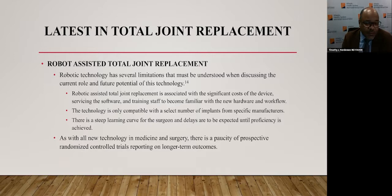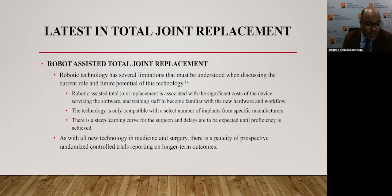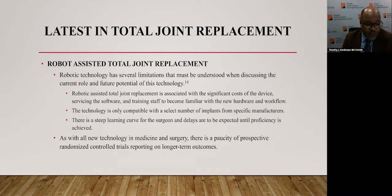Robotic technology has several limitations that must be understood. Number one, robotic-assisted total joint replacement is associated with significant cost of the device, servicing the software, and training the staff to become familiar with new hardware and workflow. The technology is only compatible with a select number of implants from specific manufacturers. There is also a steep learning curve for the surgeon, and delays are expected until proficiency is achieved. As with all new technology in medicine and surgery, there is a paucity of prospective randomized control trials reporting long-term outcomes.